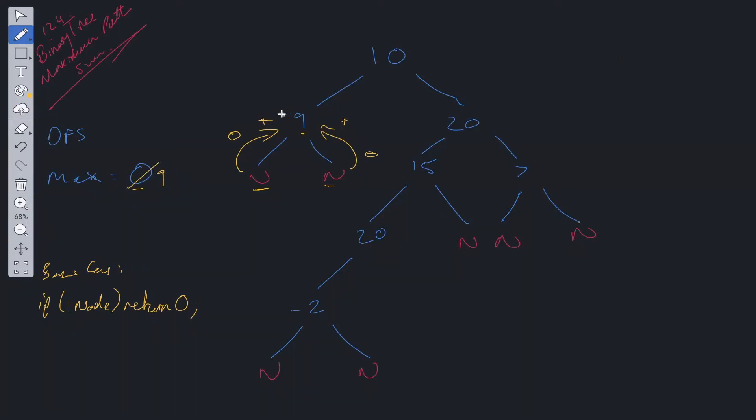What we need to pass up from this side is going to be a maximum between the left value and the right value plus the root value. The reason we do this is because we cannot take both of these sub-trees. This path here is a valid path, and this path right here is a valid path, but including both of them is not valid. So we need to return up the root value plus the maximum between left or right. In this case, it's just 0, so we're going to return up 9.